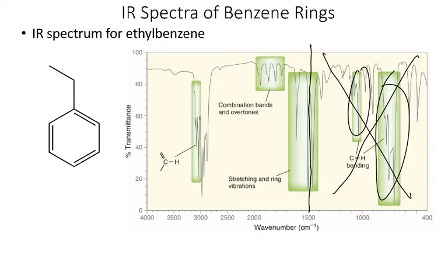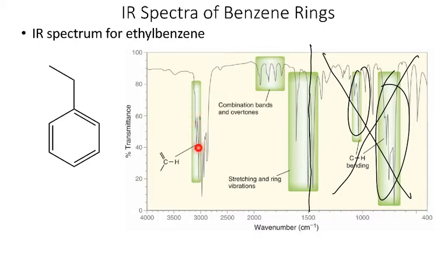We also see a signal at 3,100 wavenumbers, which is characteristic of sp2 hybridized carbon C-H stretches. In ethyl benzene, we also have a signal less than 3,000 wavenumbers because of the ethyl group — those sp3 hybridized carbons give C-H stretches down there. But the signals coming from the benzene ring are the sp2 C-H stretches, the combination or overtone bands, and the carbon-carbon double bond signal.